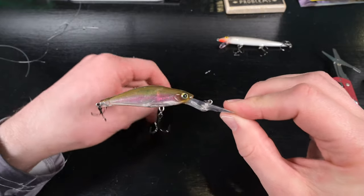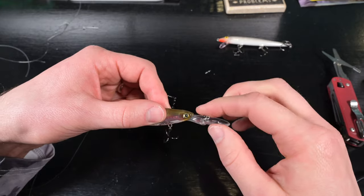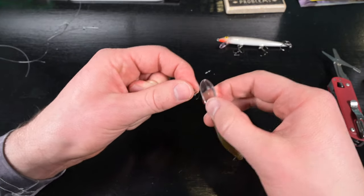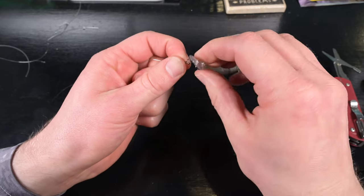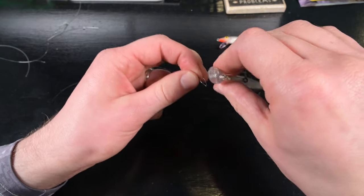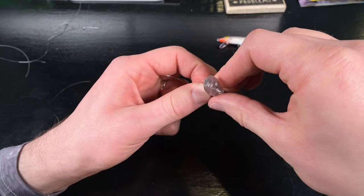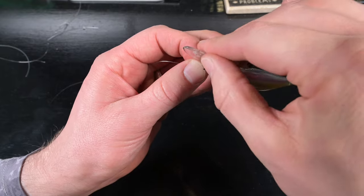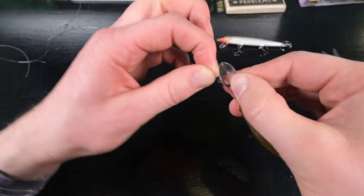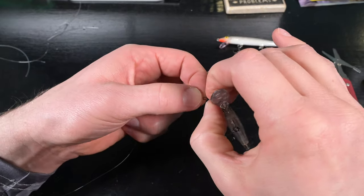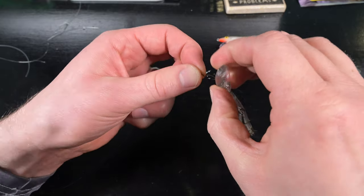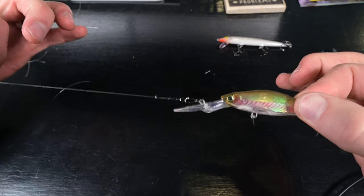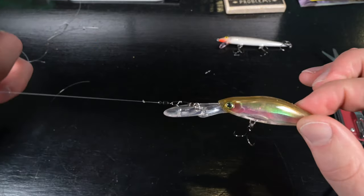These also work out great when you have a crankbait with a huge bill, because tying the perfection knot on this is a lot harder. But with the swivel, I can just pop that loop on. This is a fantastic trolling option and I've caught a lot of fish using this.